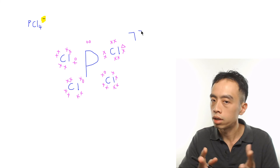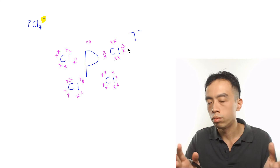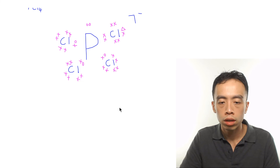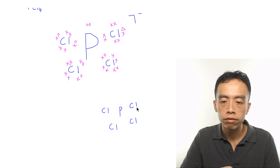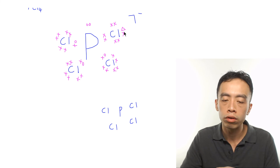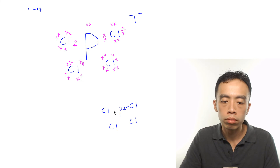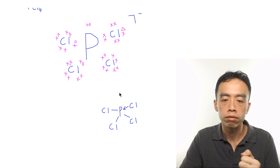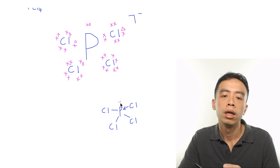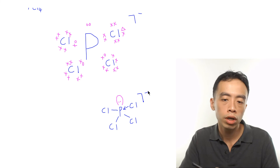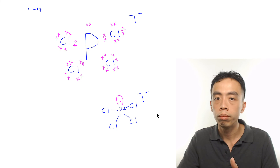For the Lewis structure of PCl4⁻: phosphorus is at the center, the dative bond is drawn as an arrow from Cl to P, the remaining three are normal covalent bonds, there is a lone pair on phosphorus, and the overall negative charge is indicated. This is the Lewis structure for PCl4⁻.